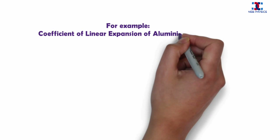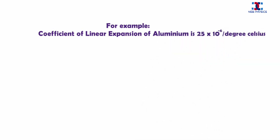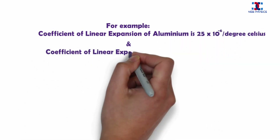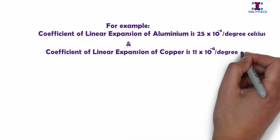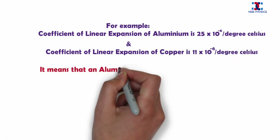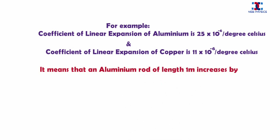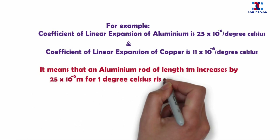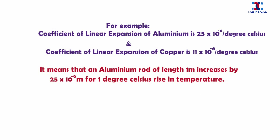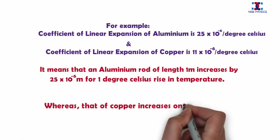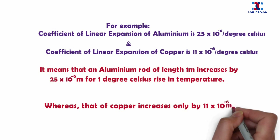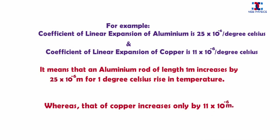For example, the coefficient of linear expansion of aluminium is 25 × 10⁻⁶ per degree Celsius, and the coefficient of linear expansion of copper is 11 × 10⁻⁶ per degree Celsius. This means an aluminium rod of length 1 meter increases by 25 × 10⁻⁶ meters for a 1°C rise in temperature, whereas copper expands only by 11 × 10⁻⁶ meters.